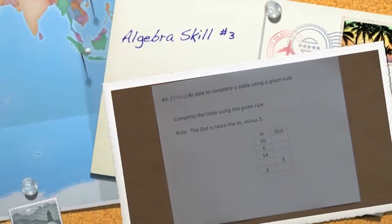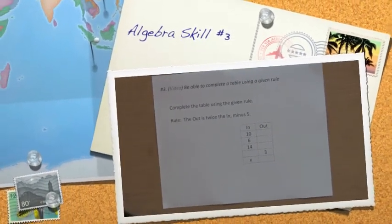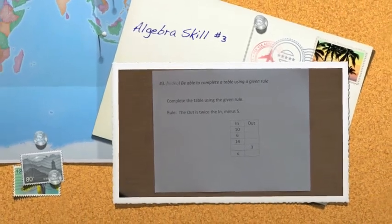Alright, skill number three: to complete a table following a rule. For this table, it's an in-out table.